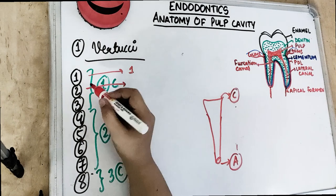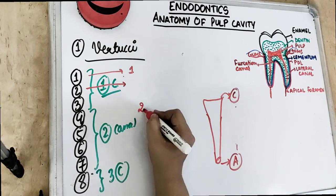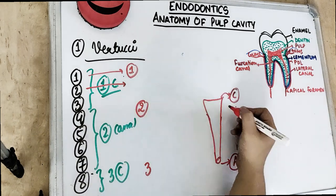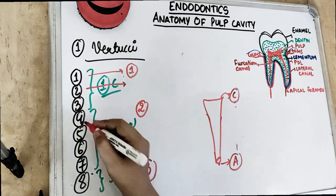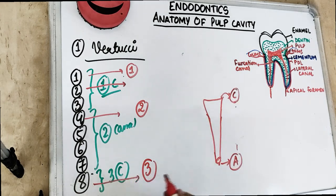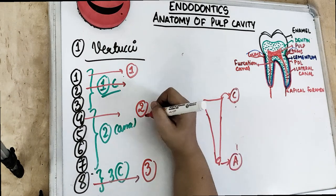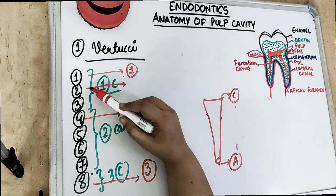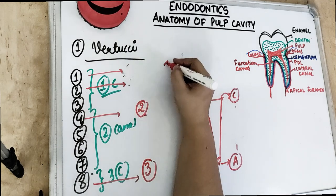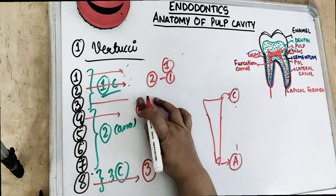To make it easier, remember: types 1 to 3 exit as 1 at the apex; types 4 to 7 exit as 2; and type 8 exits as 3. For type 1 it is 1 canal at pulp chamber and 1 at the apex. For type 4 it is 2 canals at the pulp chamber and 2 at the apex. For type 8 it is 1 canal at the pulp chamber leaving as 3 canals.